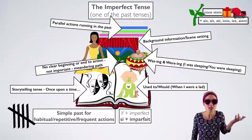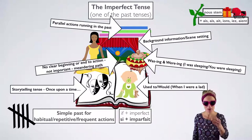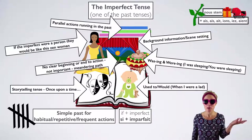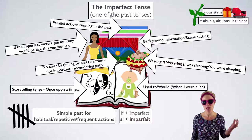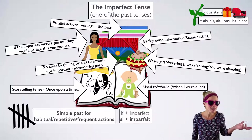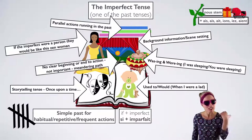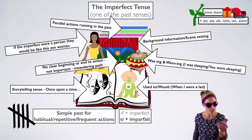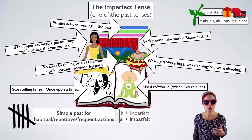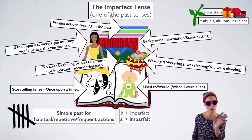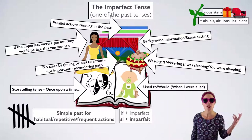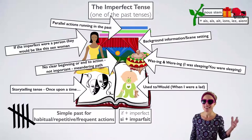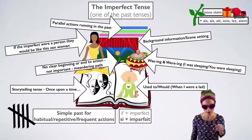With the imperfect, there is no clear beginning or end to the action. It's not important. It's like a meandering path. If the imperfect were a person, they would be like this zen woman. It doesn't matter when it started; it doesn't matter when it finished. She loves to tell a story about what she used to do when she was young, and goes into great detail about the background information. The sun was shining. The birds were tweeting. Okay, let's get going.